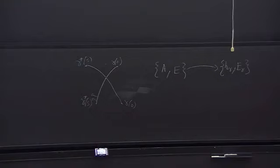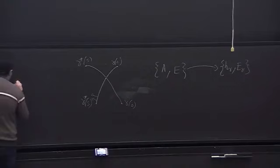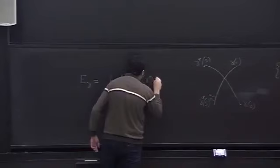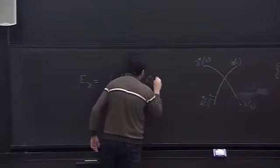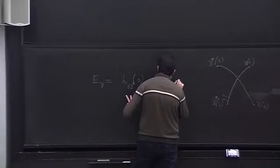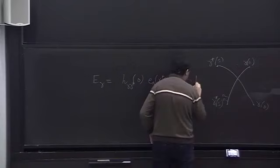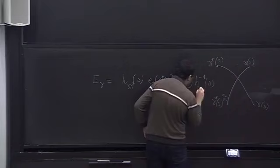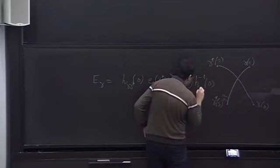So we can write this parallel transport or the edge of this element with this tangent vector multiplied by the inverse of the holonomy ds.